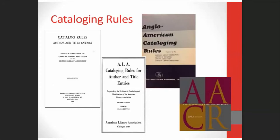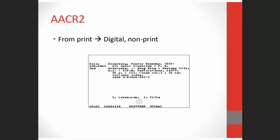In 1908, the American and British Library Associations jointly published the first sets of cataloging rules in separate editions for each country. Then ALA published a second set of American rules in 1941 and again in 1949. After years of international meetings and drafts, the American, British, and Canadian Library Associations finally published the Anglo-American Cataloging Rules, or AACR, in 1967. AACR II was the second edition, published in 1978, and was the standard for many years, but it was created when libraries were using four-by-six-inch cards to describe mostly print items.